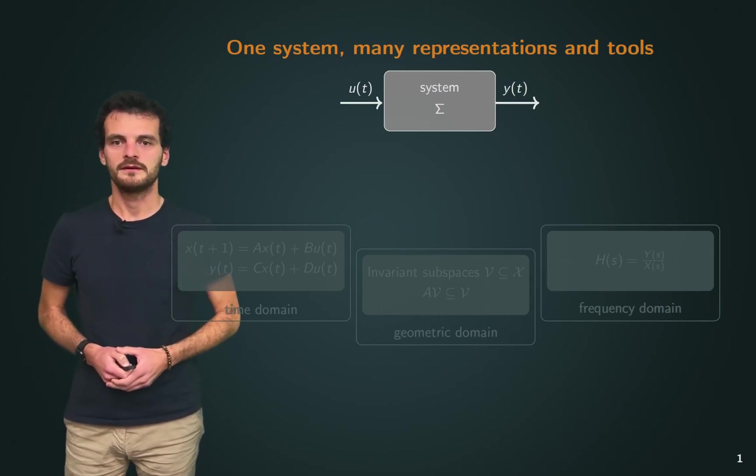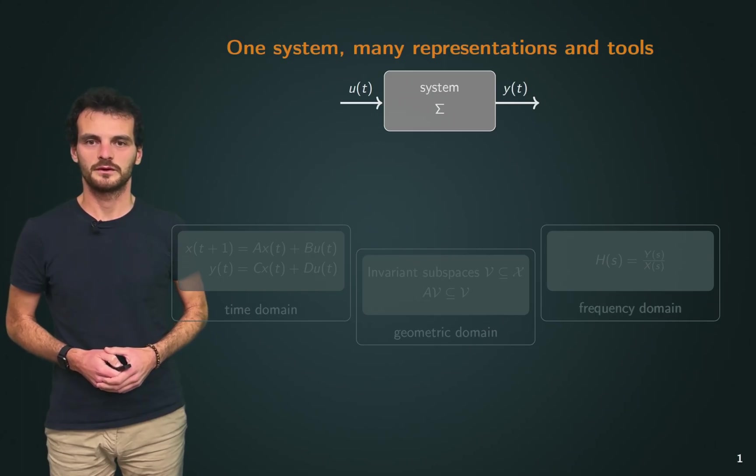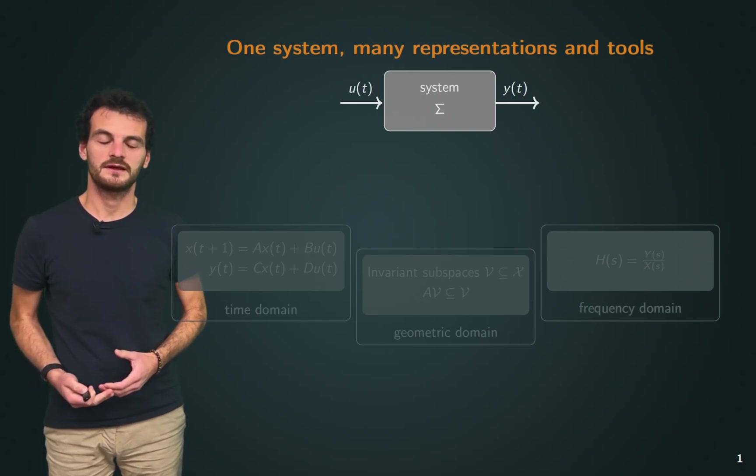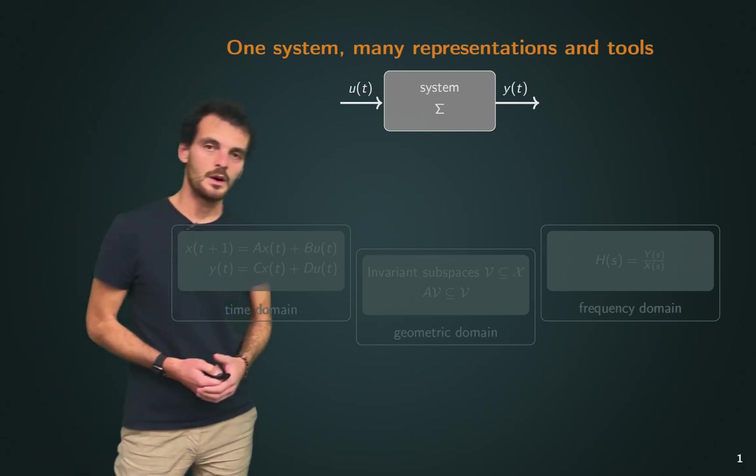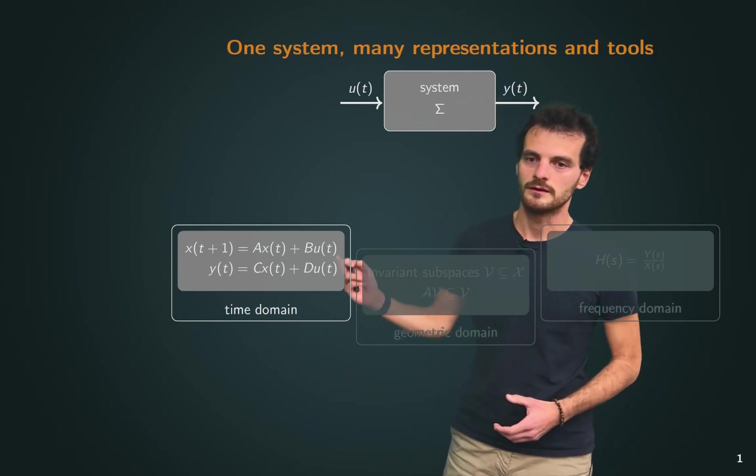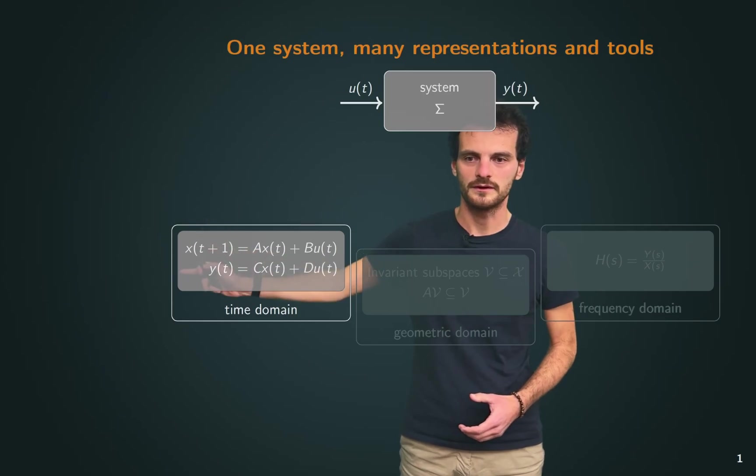When we work with linear systems, we have many representations that we can use to express the input-output relationship of the system, and therefore to study its properties and to design controllers. One such approach is that of the time domain, where the input-output relationship is described through a state x.